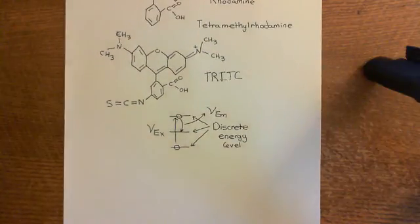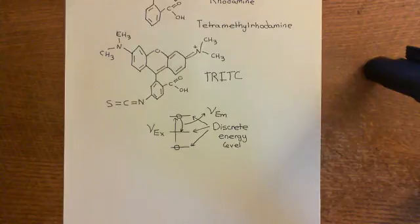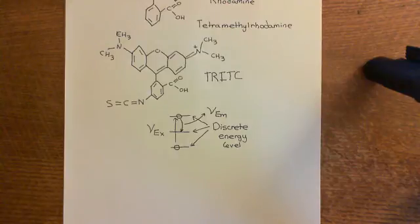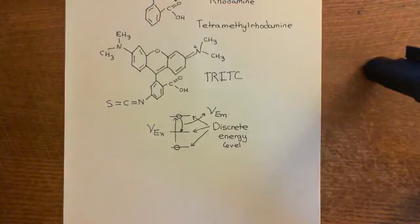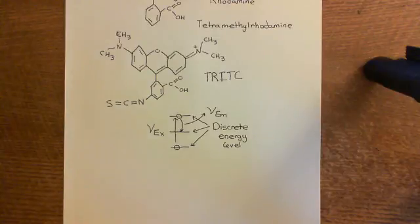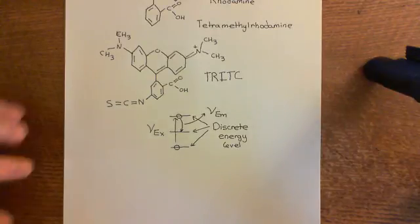Now that we understand fluorescence, we understand that these two molecules - FITC and TRITC - if we shine certain photons of a specific frequency onto them, they will absorb them and emit some other photon of a different frequency. The common example of fluorescence we're used to is that if you shine UV onto something which is invisible, then suddenly it will glow a visible colour, maybe green or blue. That's what we're used to as fluorescence - and UV has a higher frequency than blue light.